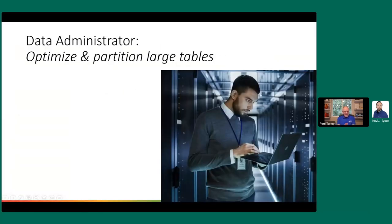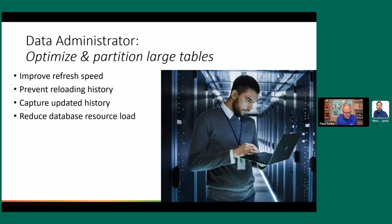So my database administrator is now saying: we need to optimize and partition our large tables. You, developer, went and created this massive Power BI project that imports hundreds of millions of rows. Every time the refresh runs in the middle of the night, the lights dim in my data center — you're running these massive queries. I know most of our data doesn't change overnight, so why are you fetching the same old data over and over again? We want to improve refresh speed, prevent reloading history, have the option to capture updated history if an old record changes, and reduce the database resource load.